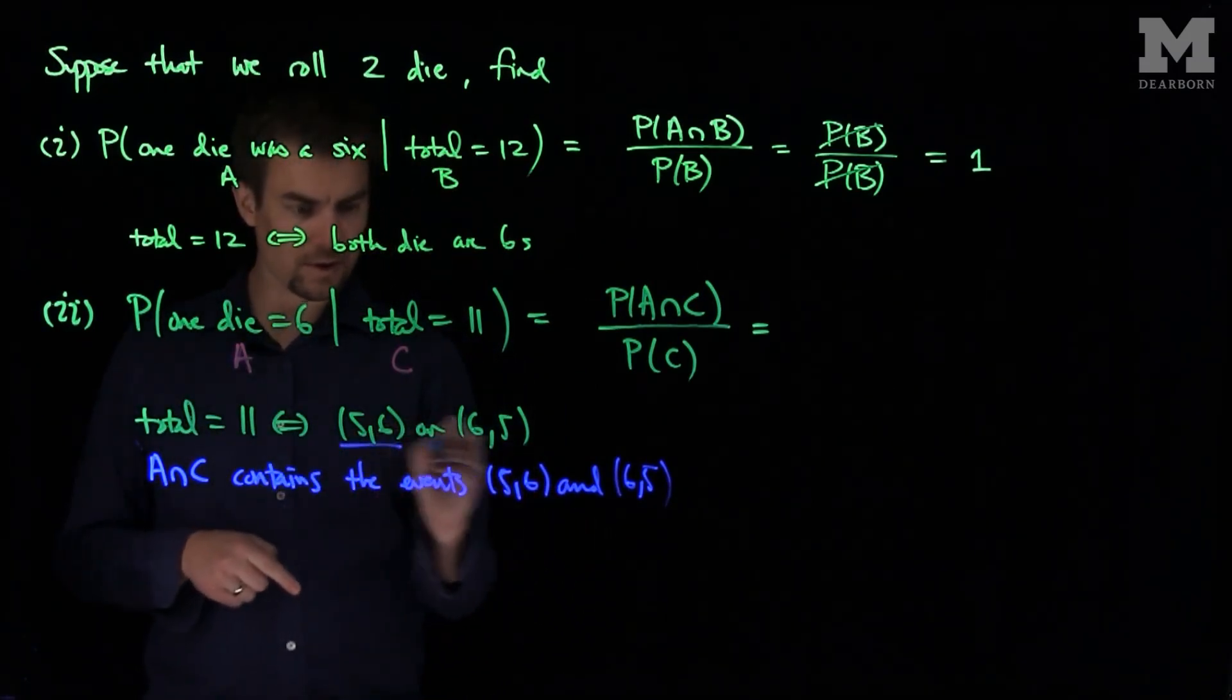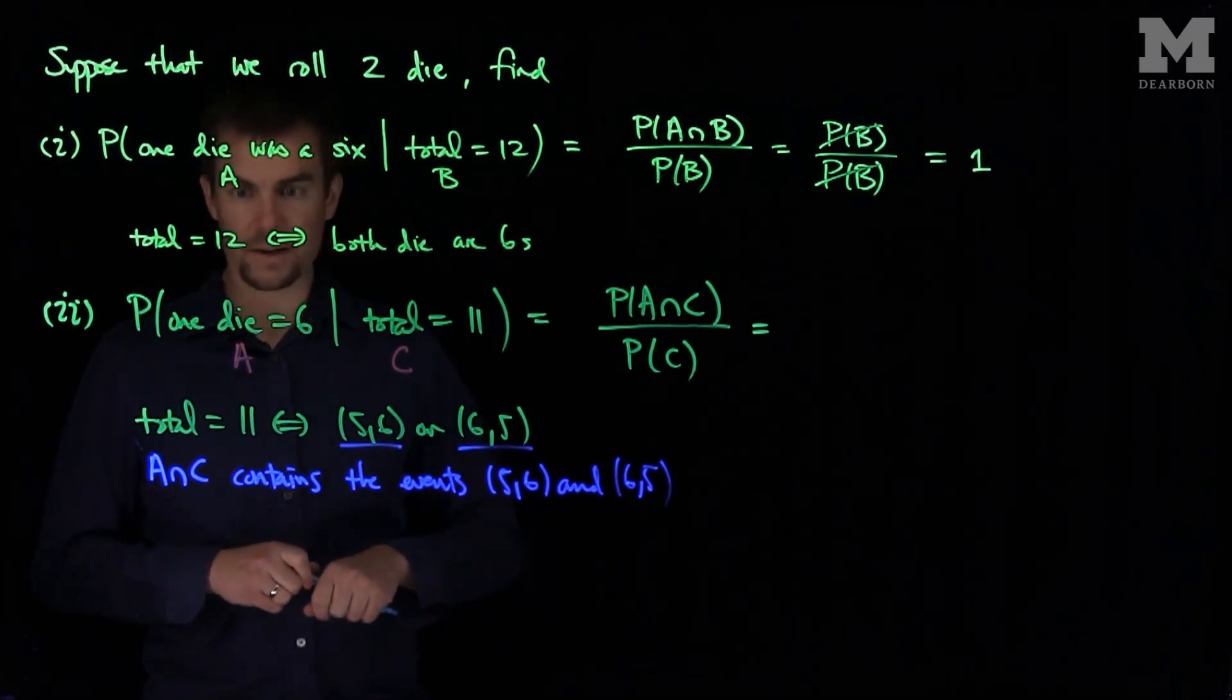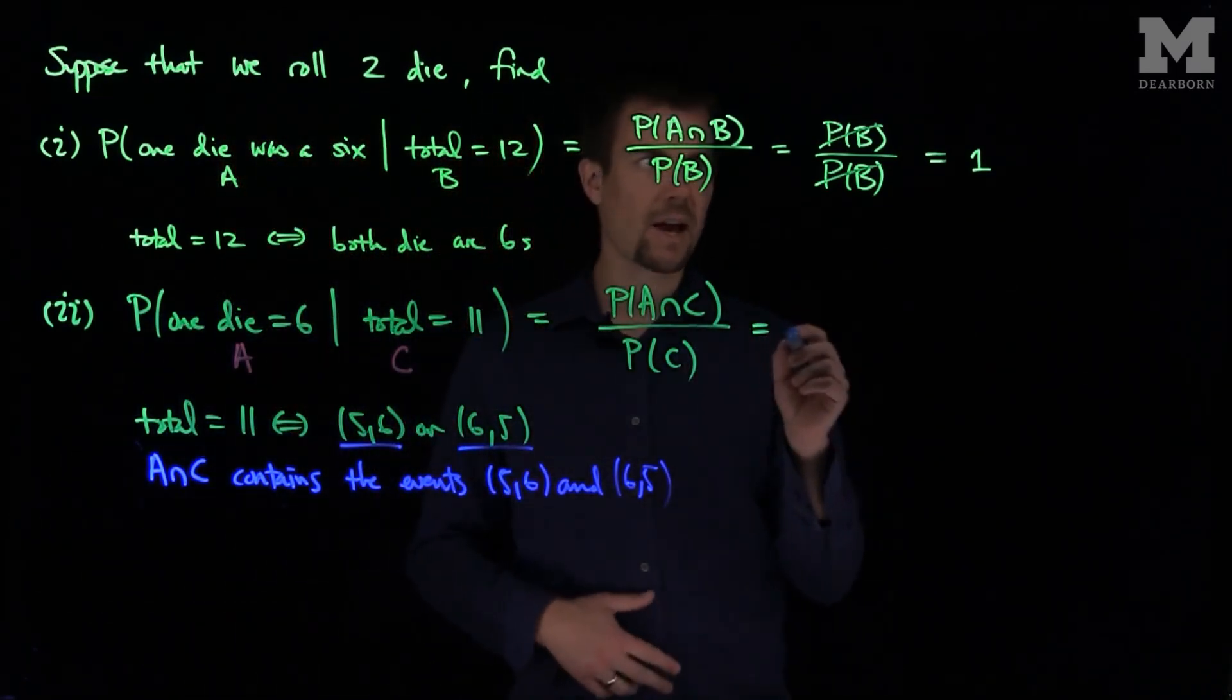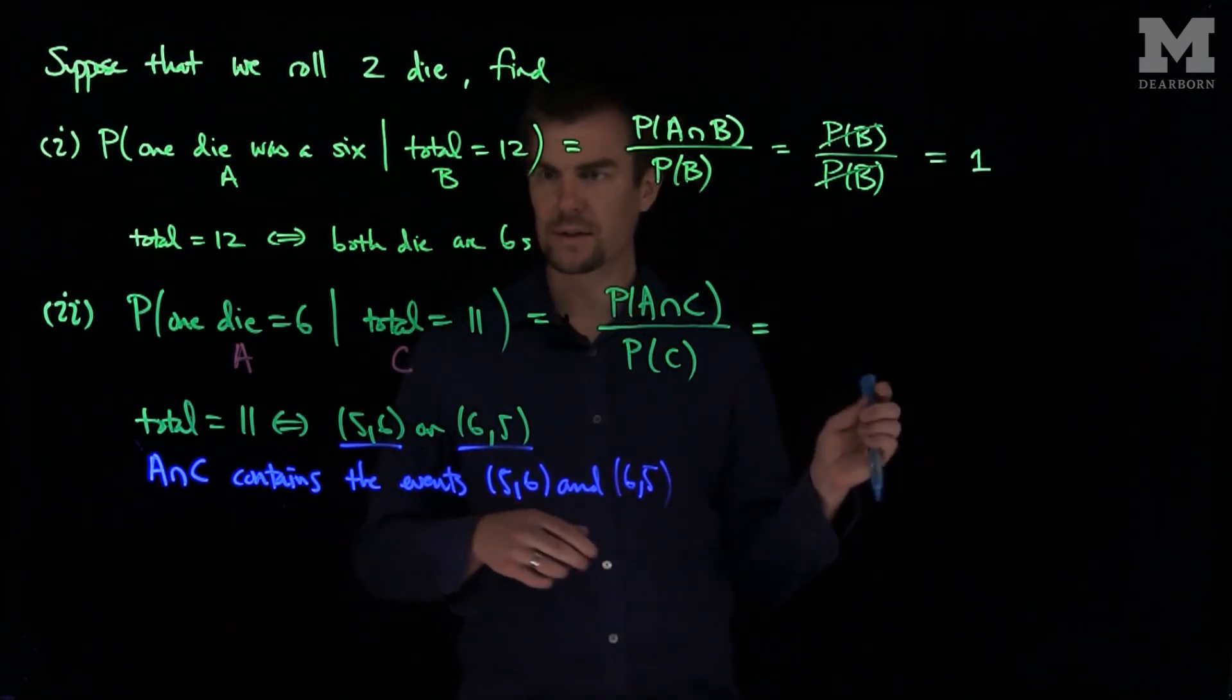So again, what happens over here is that A intersect C contains both those events, and in either case, the total is 11, implies that either one of the dice has to be equal to 6. So this is contained in the event A. So the event C is contained in that event.